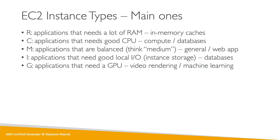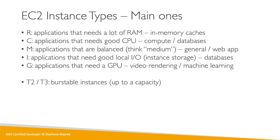G stands for GPU. G instances come with a GPU and they're great for video rendering or machine learning, since machine learning uses GPU. And then there are the T2 and T3 instances we've been using so far — T2 because that's the one in the free tier — and they're called burstable instances, meaning you get good performance for a burst for a short while.